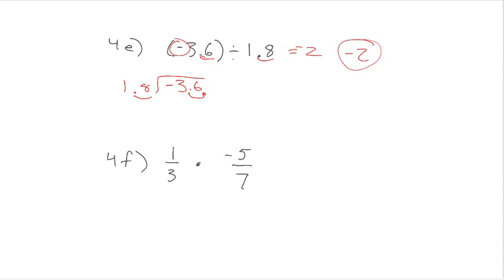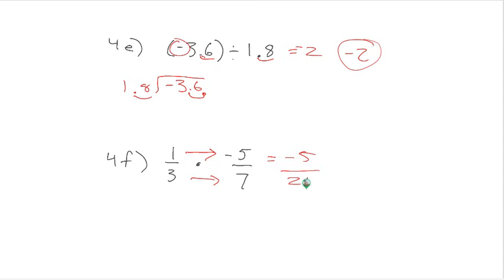For 4f, this was simpler than some folks realized. When we multiply fractions, we use the same sign rules. If one of them is negative, multiply straight across: 1 times negative 5 equals negative 5, and 3 times 7 equals 21. That's our answer — negative 5 over 21.